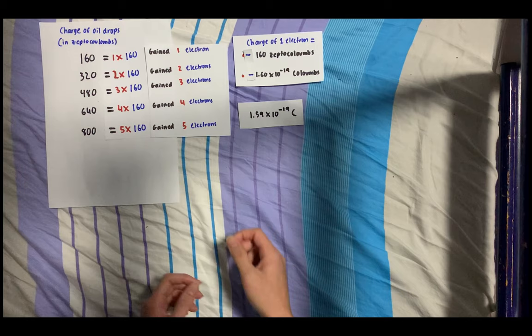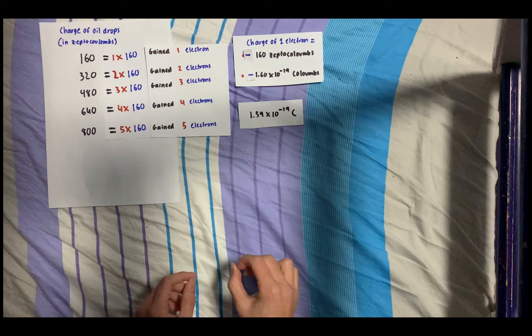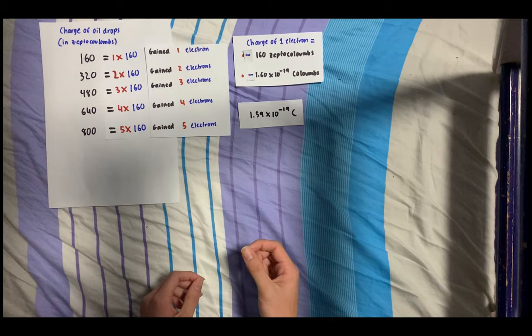This is because for the experiment, they used an inaccurate value for the viscosity of air as we know it today, as well as not considering the buoyant force of the oil droplet in their calculations. Later scientists would improve on the experiment, which would lead to this value here.